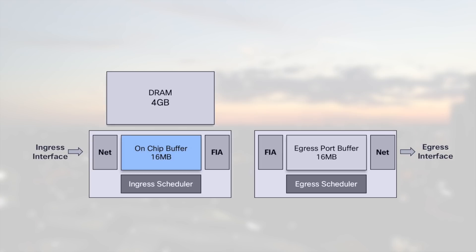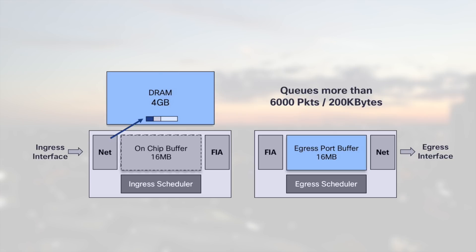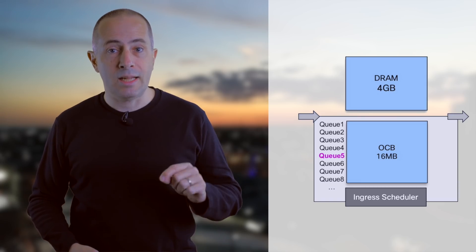For each NPU, we have three types of packet memories. In ingress, we have 16 megabytes inside the ASIC — we call this on-chip buffer or OCB. Also in ingress, we have a 4 gigabyte graphical memory on the side of the chipset, called off-chip buffer or more generally DRAM. Finally, on the egress side, we also have a 16 megabyte memory named egress port buffer. If the queue contains less than 6,000 packets or 200,000 bytes, the packets are stored in on-chip buffer. It's only when we exceed this threshold that we evict the queue to the DRAM. This represents a tiny portion of total traffic — for the vast majority of cases, it will be much less than 1%.